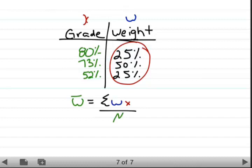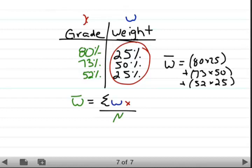What we're going to have, the weighted average equals the sum of the weights times X. So 80 times 25 plus 73 times 50 plus 52 times 25, all of that over 100%. Put that into your calculator. After you've done that, you should get a weighted mean or final average of 69.5%. So that person's final grade would be 69.5%.